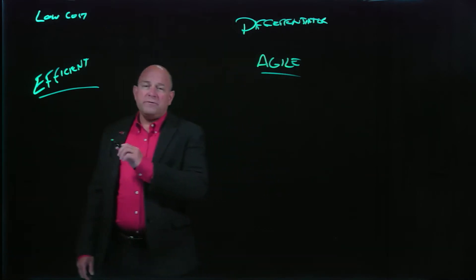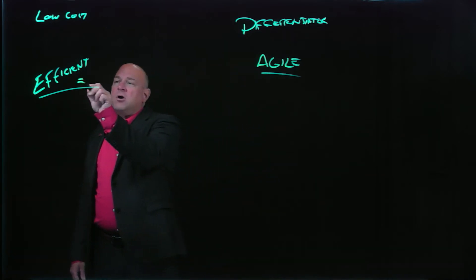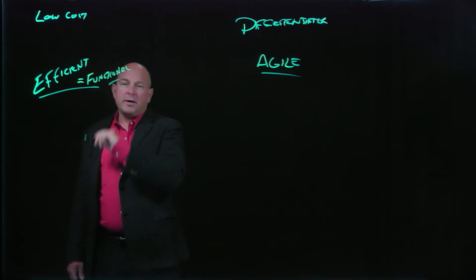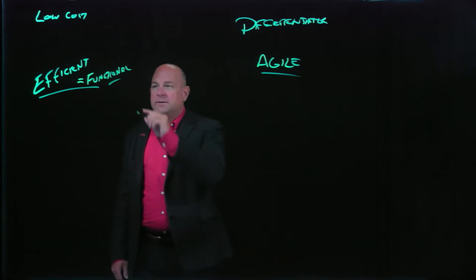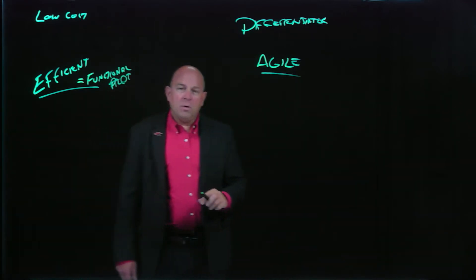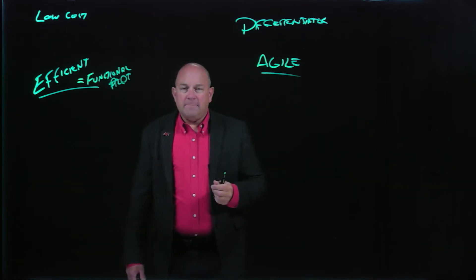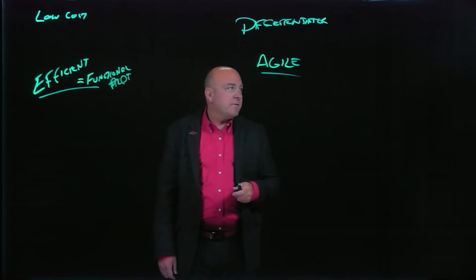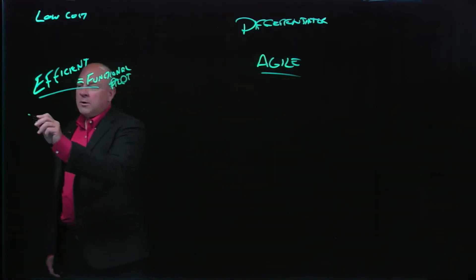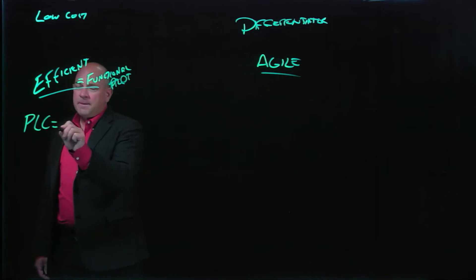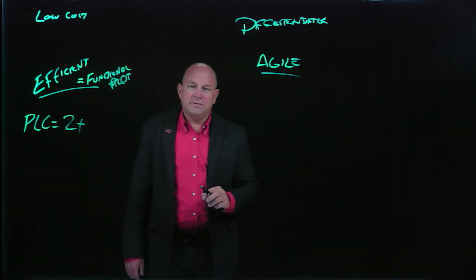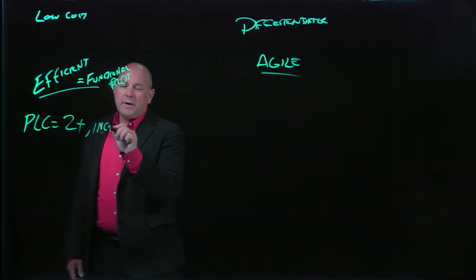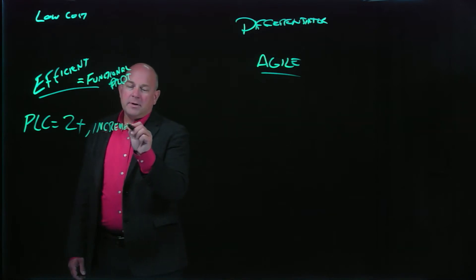Many times these decisions are driven by our product type. Efficient supply chain strategies are often in alignment with what we call functional products. When we think about a functional product, the first thing we tend to think about are product life cycles that tend to be long — maybe two years plus. In other words, the product doesn't change very much. When it does change, the innovation tends to be not radical but incremental changes.